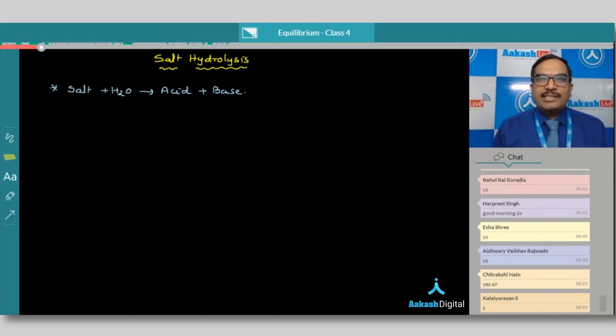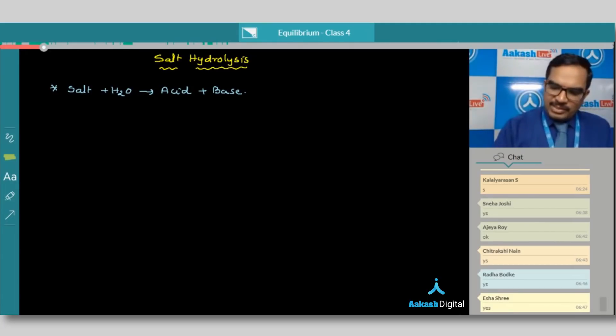But here, coming to salts, we have different kinds of salts. Because if you take acid, the acid may be weak acid or strong acid. Similarly, if you take a base, the base can be strong base or weak base. So in that combination, we can have four different types of salts like salt of the strong acid and strong base.